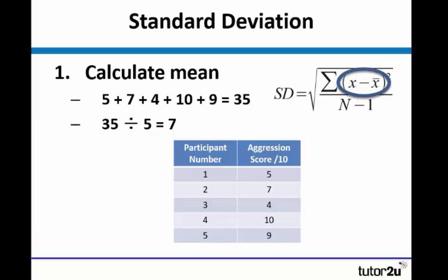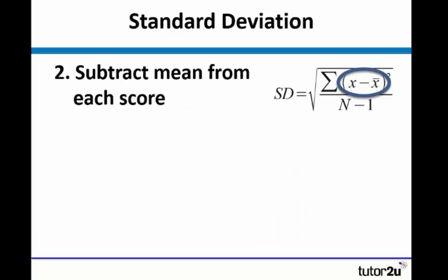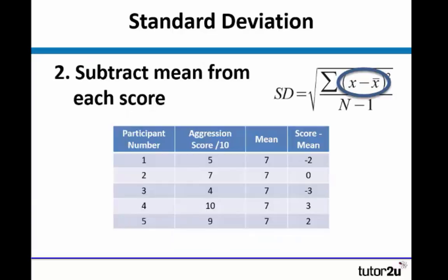So that allows us to now calculate what X minus the mean would be. So we need to subtract the mean from each score. So I've put the mean in the table there. So 5 take away 7 is minus 2. 7 take away 7 is 0. 4 take away 7 is minus 3, and so on and so forth.